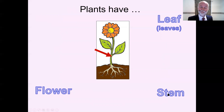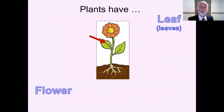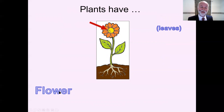Then we've got the leaf — usually green. The green leaf is picking up goodness from the sun. Notice it's one leaf, but two leaves — it's an irregular plural. Then we get to the top and we get to the flower. We've got these petals going around the outside, and this is the flower.